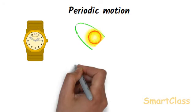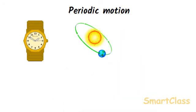Similarly, the revolution of earth around the sun is a periodic motion because earth always takes the same amount of time i.e. one year to complete one round around the sun. Also, revolution of moon around the earth is also a periodic motion.